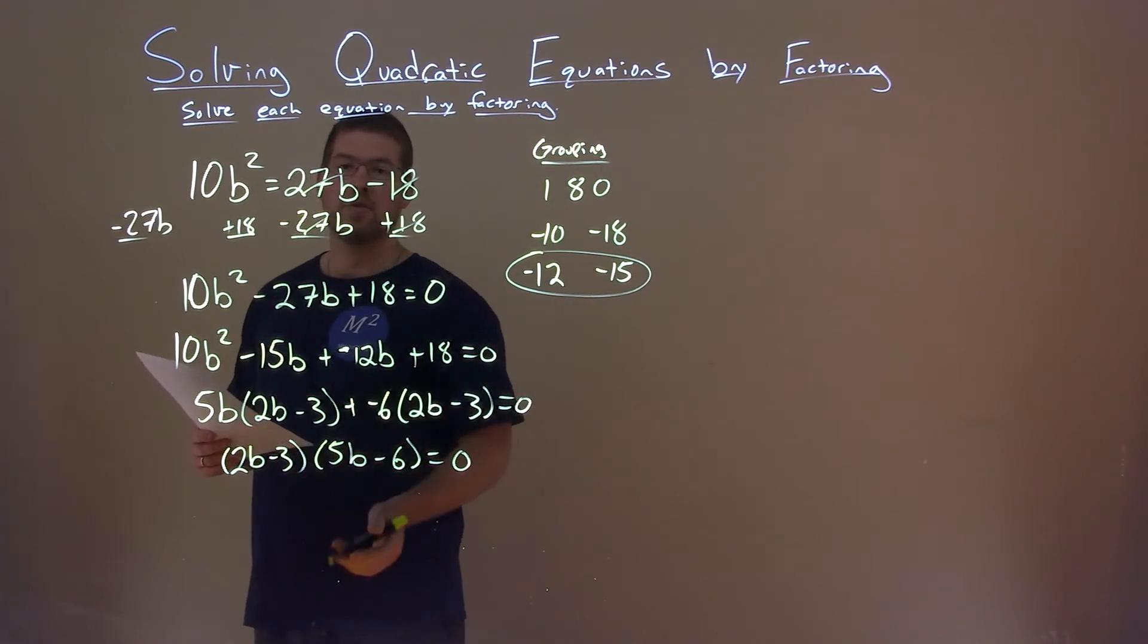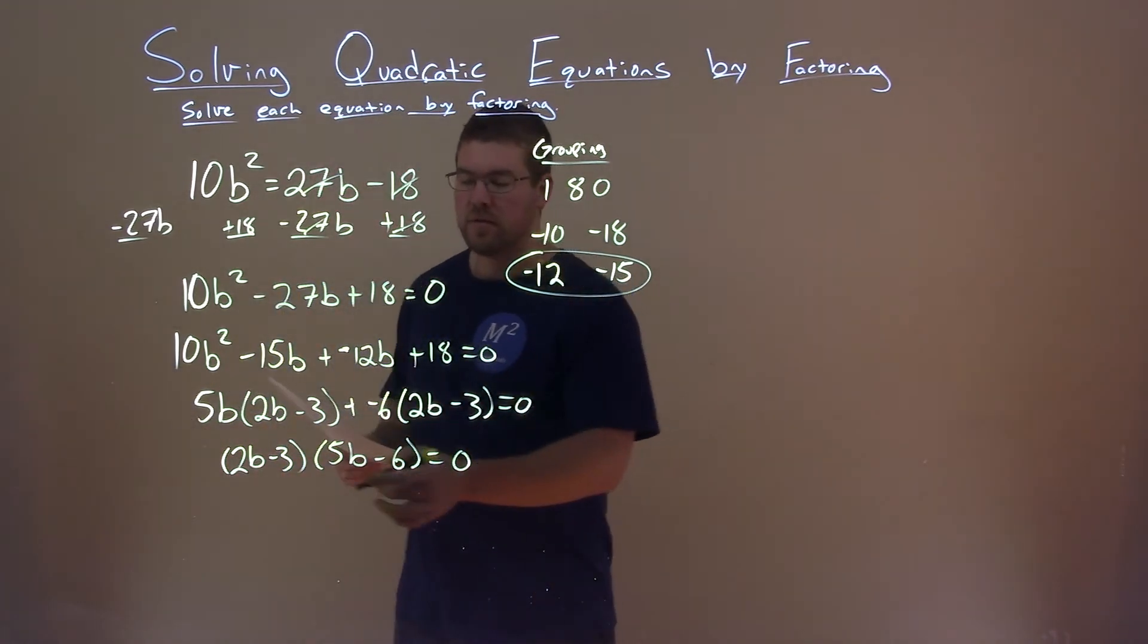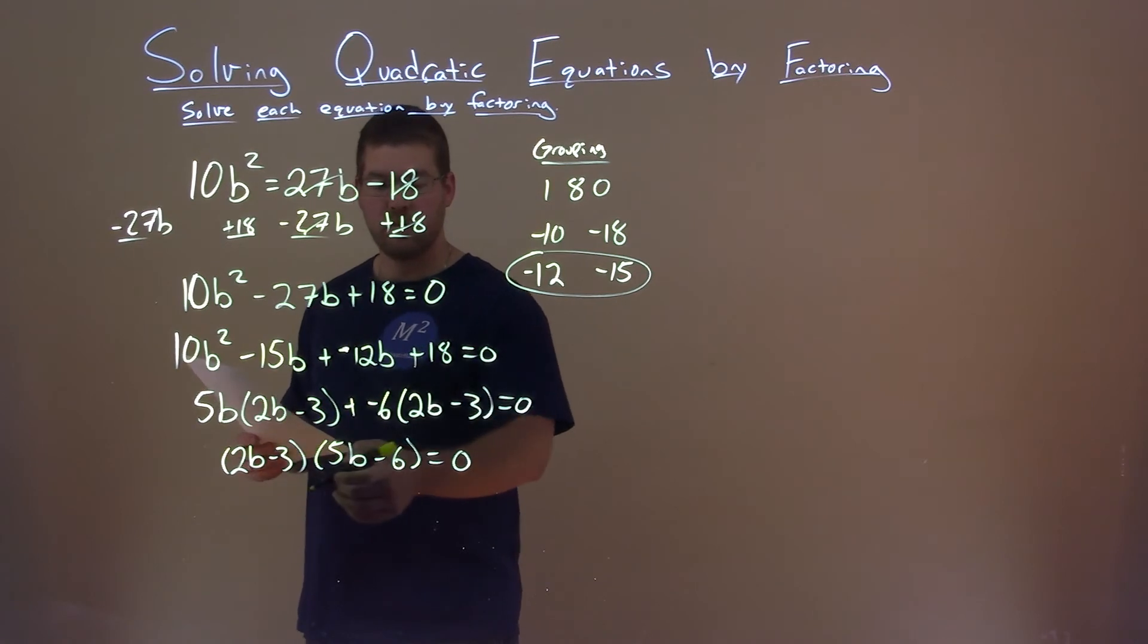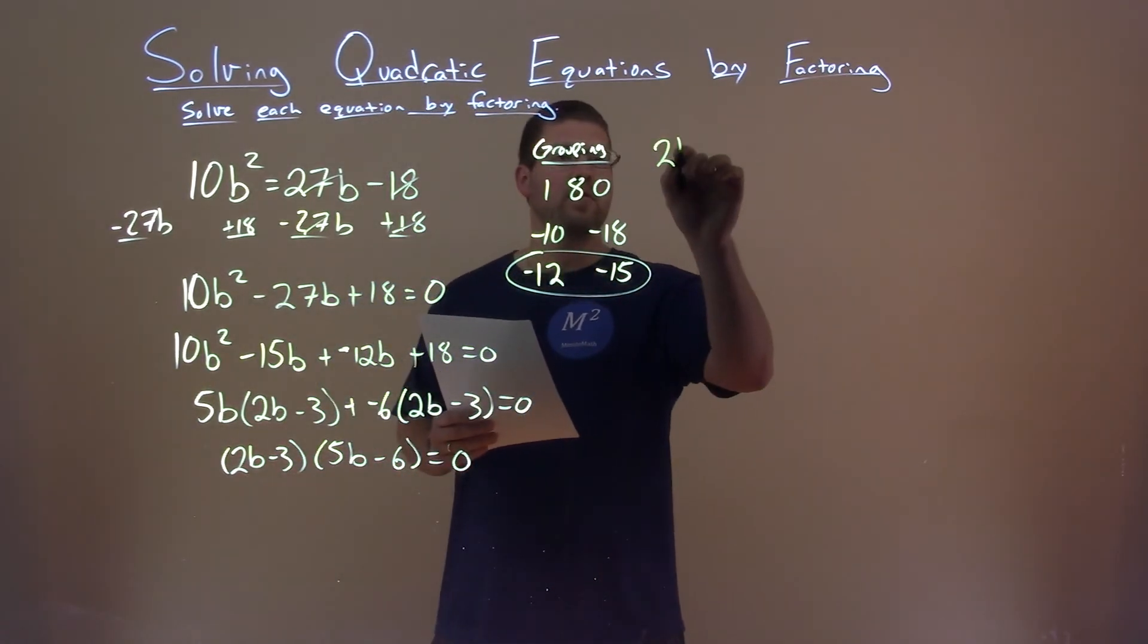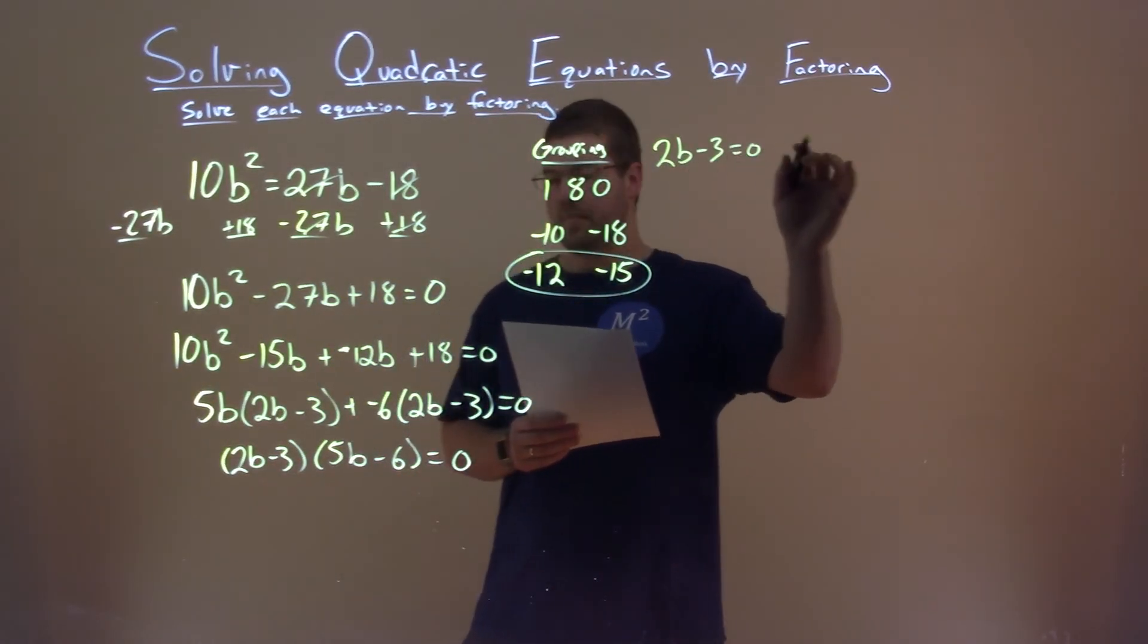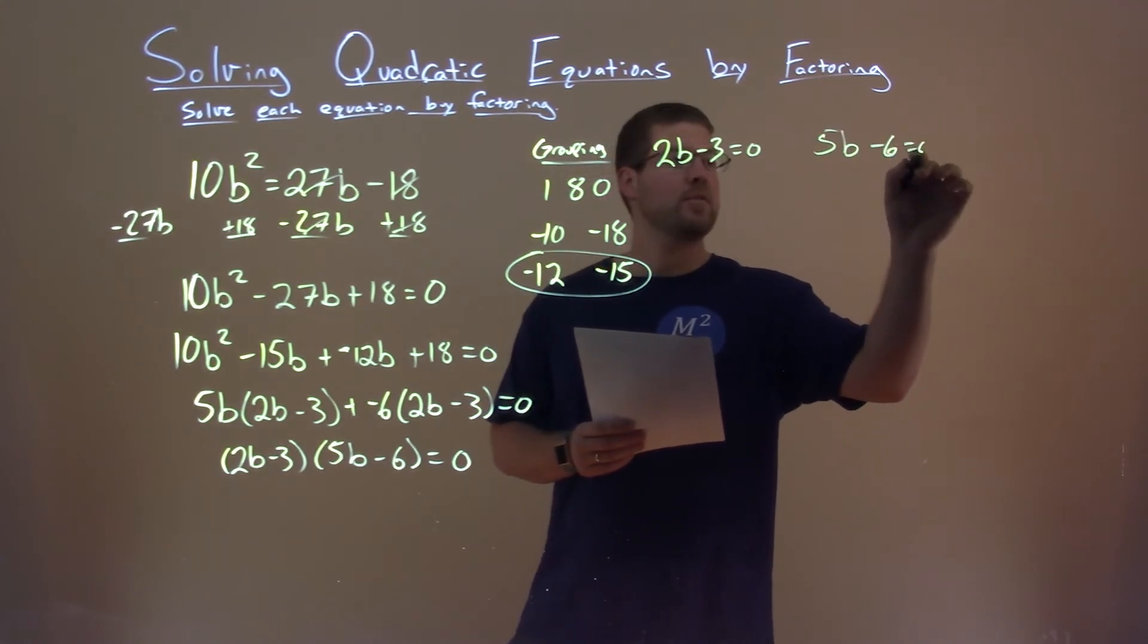So now we've actually factored this equation. Since it's in factored form and it's both equal to zero, we can set both parts now equal to zero. 2b minus 3 equals zero, and 5b minus 6 equals zero.